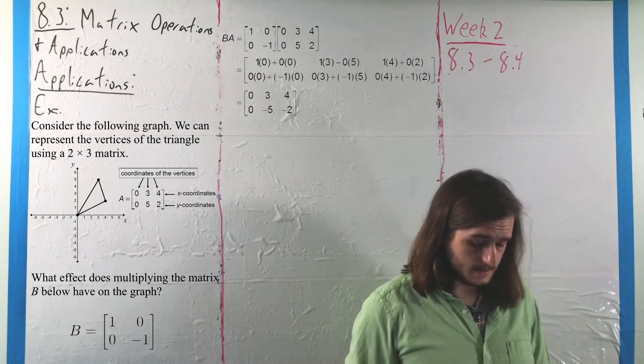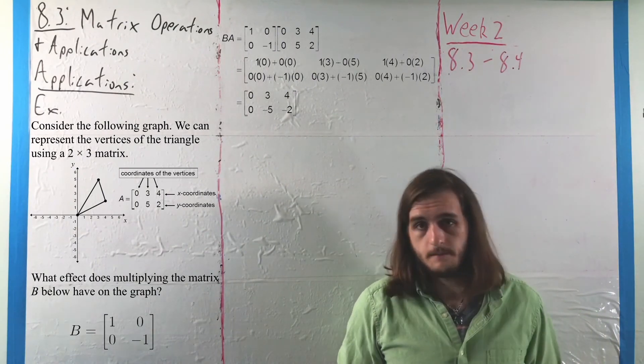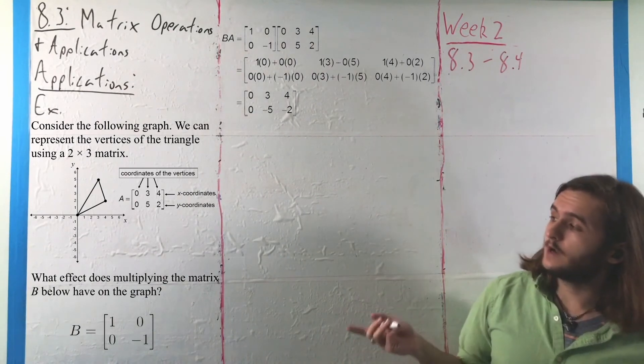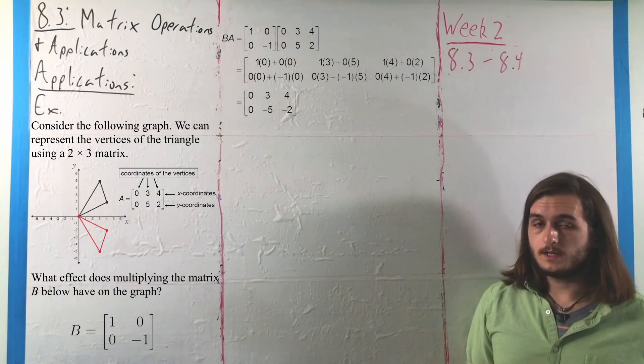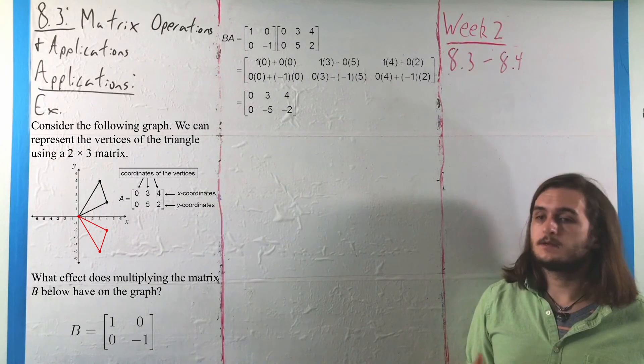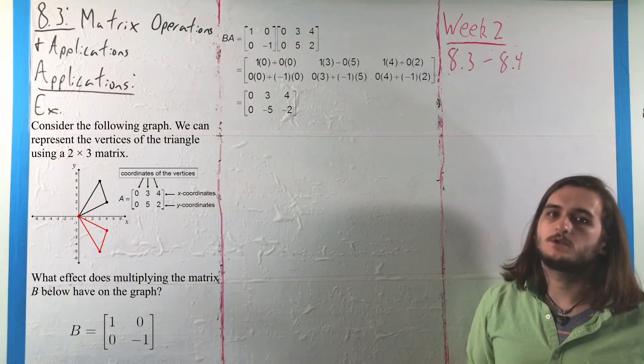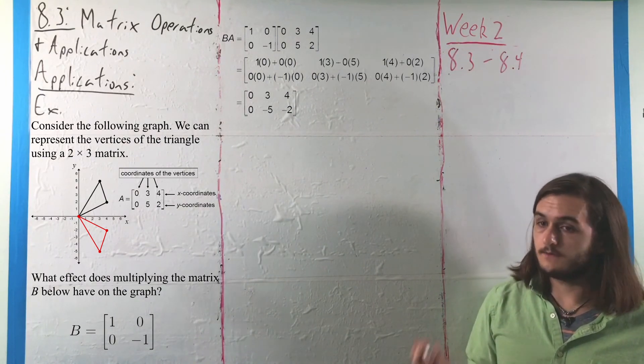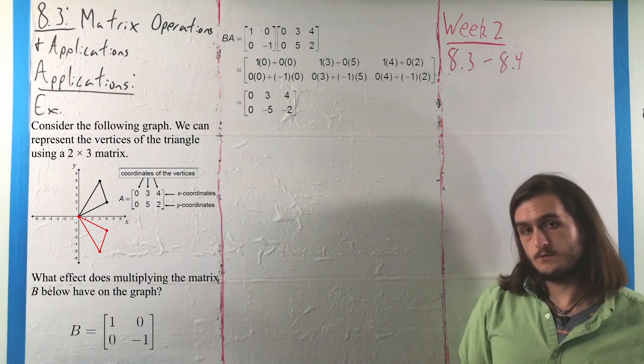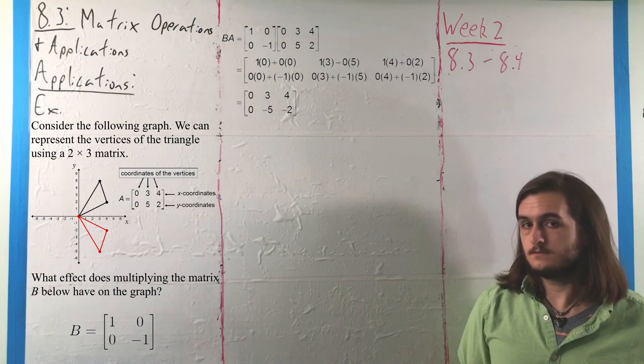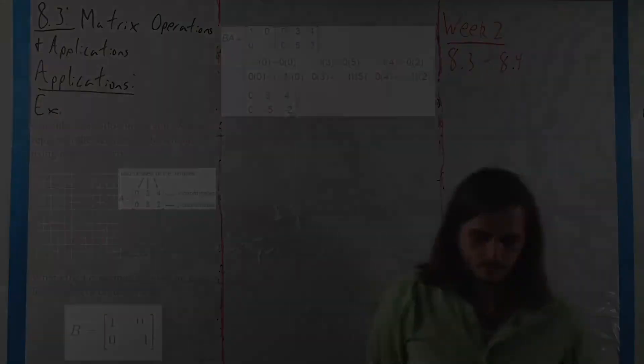Specifically, it was flipped over the x-axis. So, if we're going to think about what happened to this graphically, we would get that this matrix corresponds to a transformation of reflection over the horizontal axis. That is the x-axis in this case.